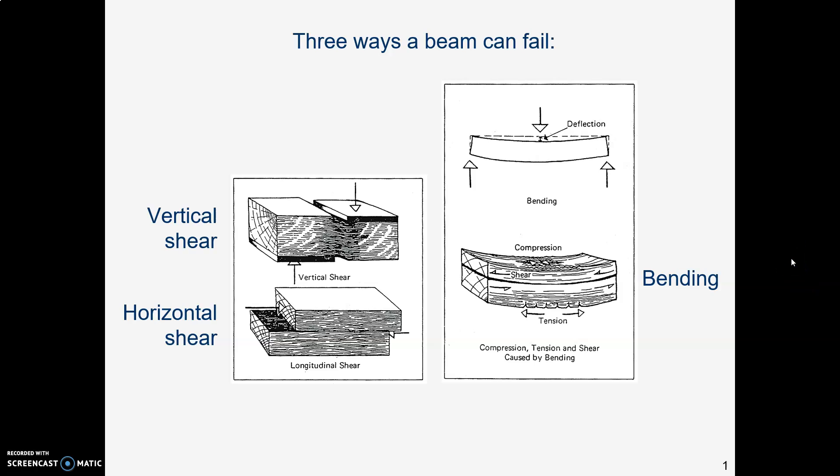Now we're going to look at a handy way to analyze beams, and there are three ways that a beam could fail. It could shear vertically, kind of like a pair of scissors up and down, it could shear horizontally, or it could bend.